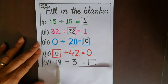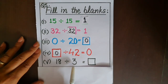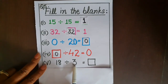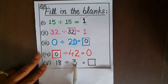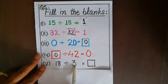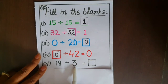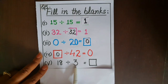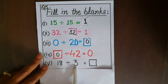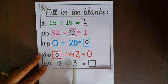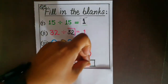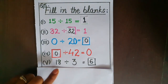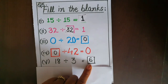Now part five: we have to divide 18 by 3. For this question we'll read the table of 3 until we get 18. Start with me: three zeros are zero, three ones are three, three twos are six, three threes are nine, three fours are twelve, three fives are fifteen, three sixes are eighteen. So by dividing 18 by 3, we get an answer six.